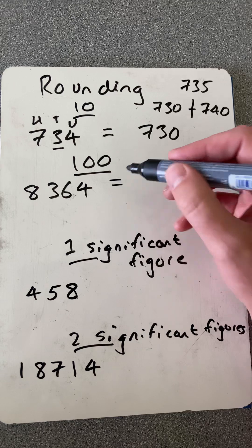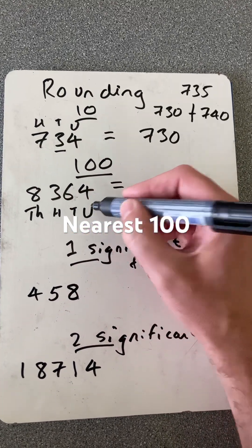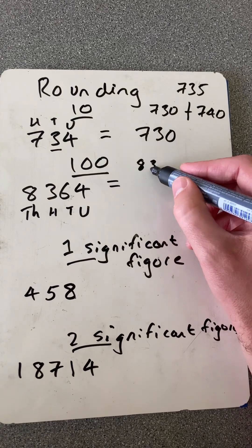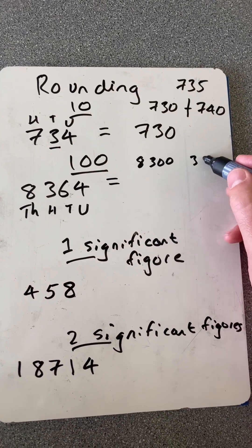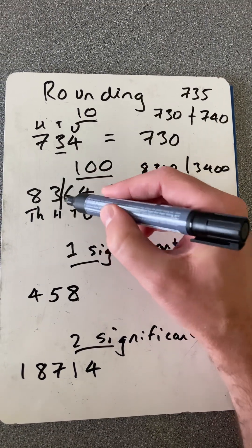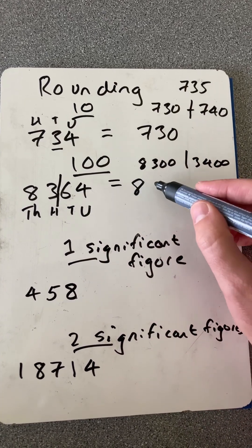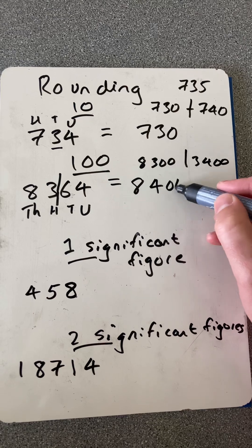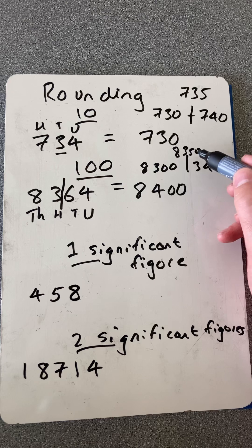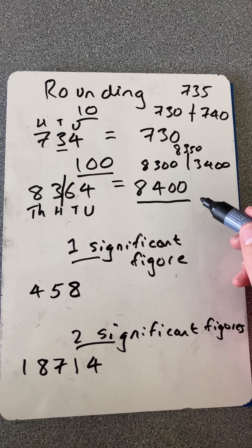What about the nearest 100? So we've got thousands, hundreds, tens and units. I want to see, is this closer to 8,300 or 8,400? So I go to the tens there, and that is bigger than 5. So I'm going to round up to 8,400 because I can see where's halfway. It's 8,350, and I'm more than that. So 8,400 is the answer there.